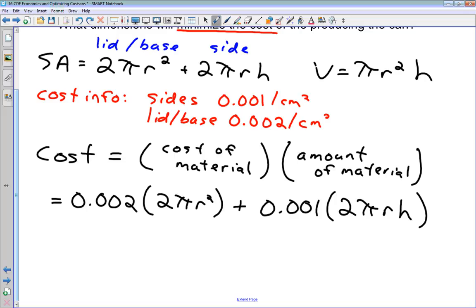There's the first draft of our function for the cost. This is the function that we want to minimize. We're going to eventually take the derivative, set it equal to 0, and solve. What problem do we have right now? We've got two variables in our cost function: radius and height. We want to get this to be a function of a single variable. That's where this volume relationship is going to come in, because we know that our volume is 500 centimeters cubed. We can rearrange for either r or h and substitute it into our cost function.